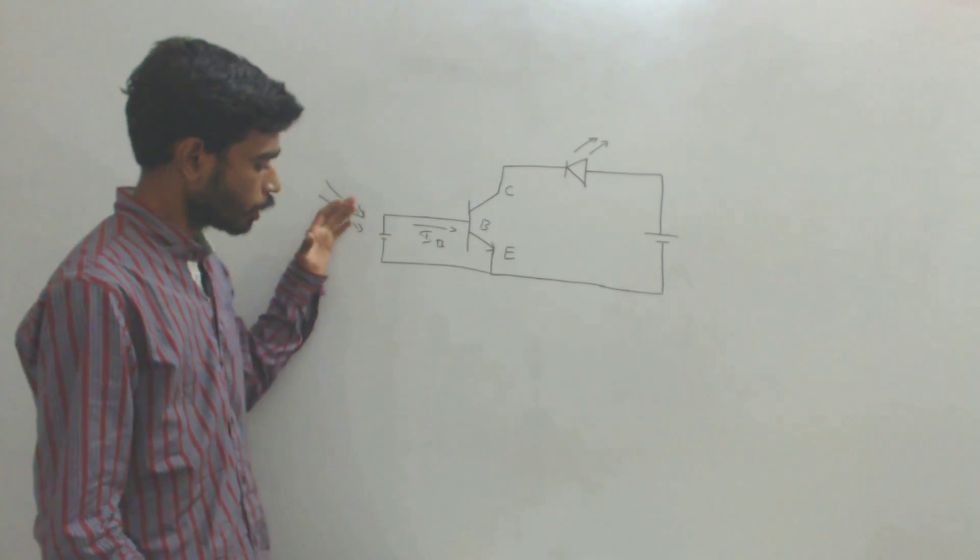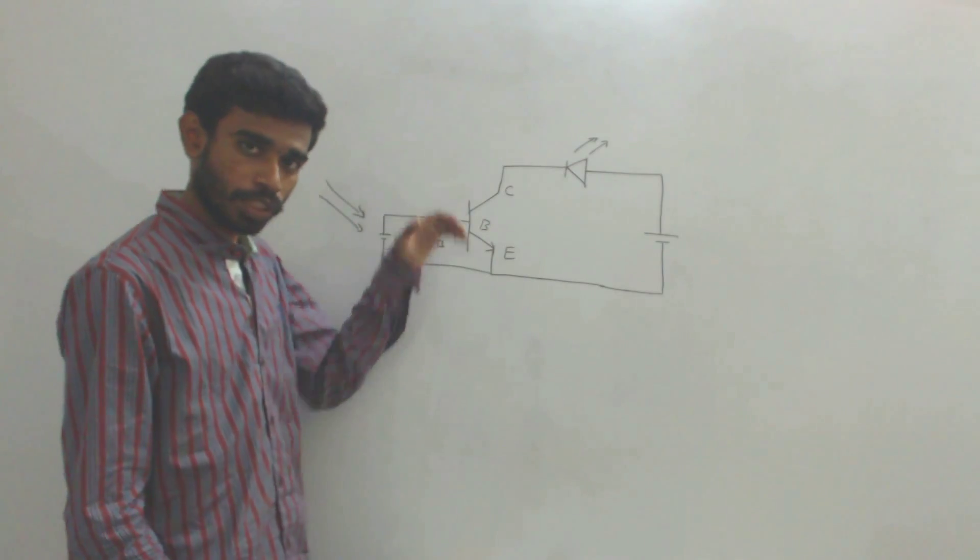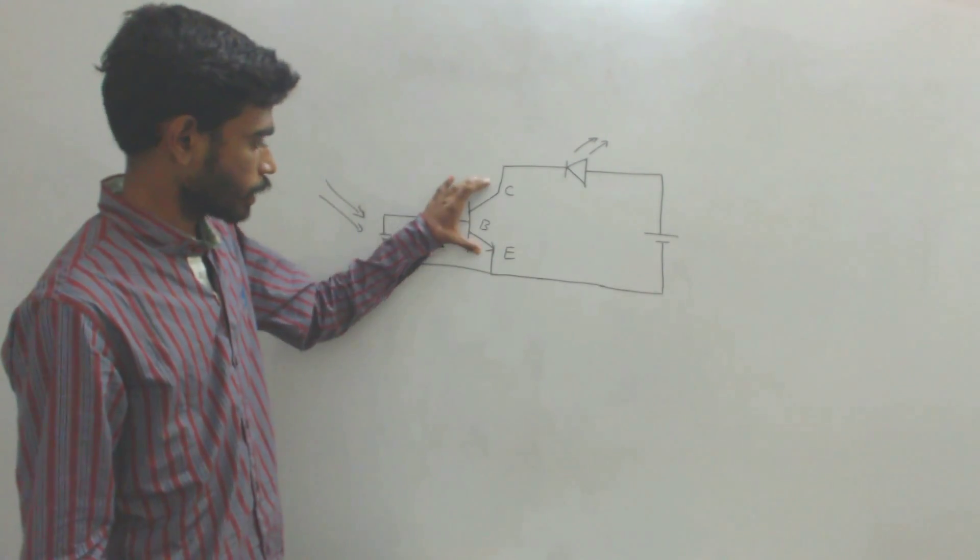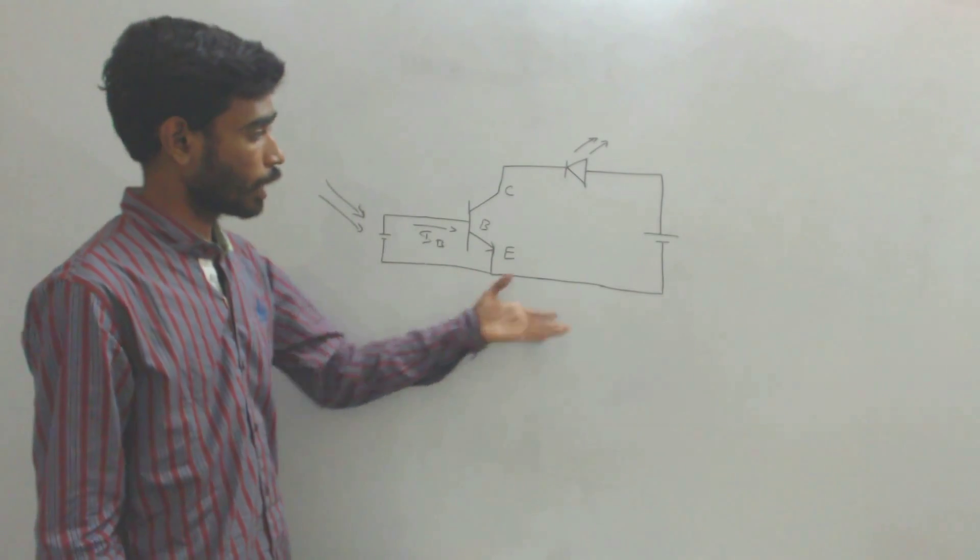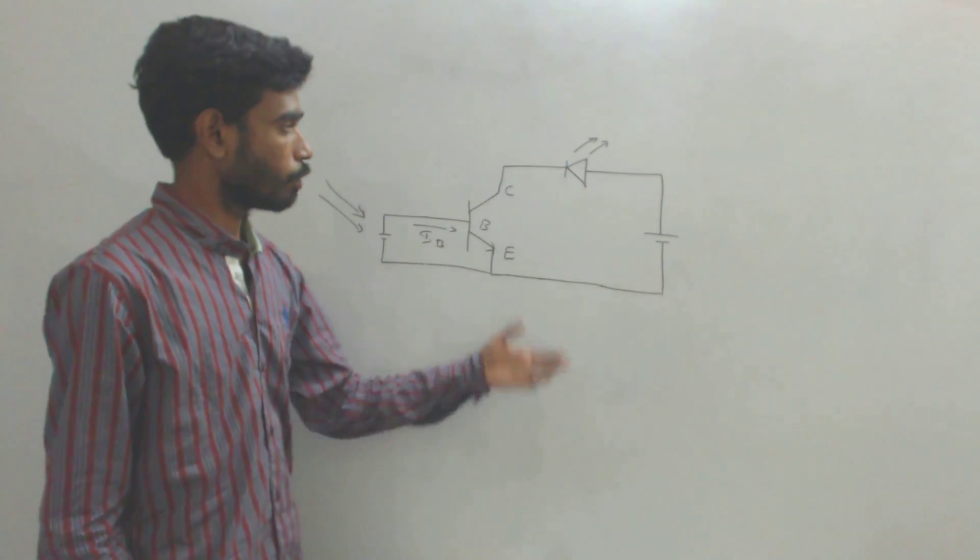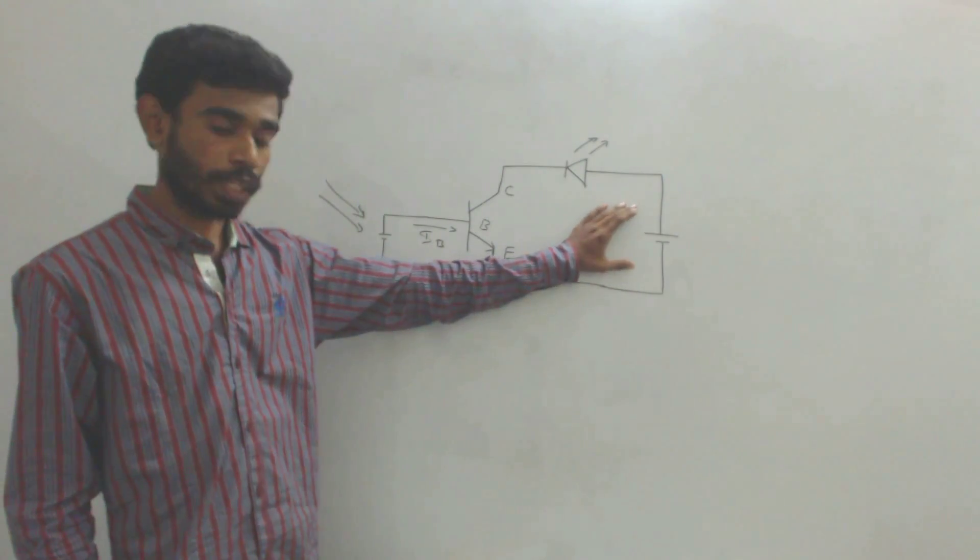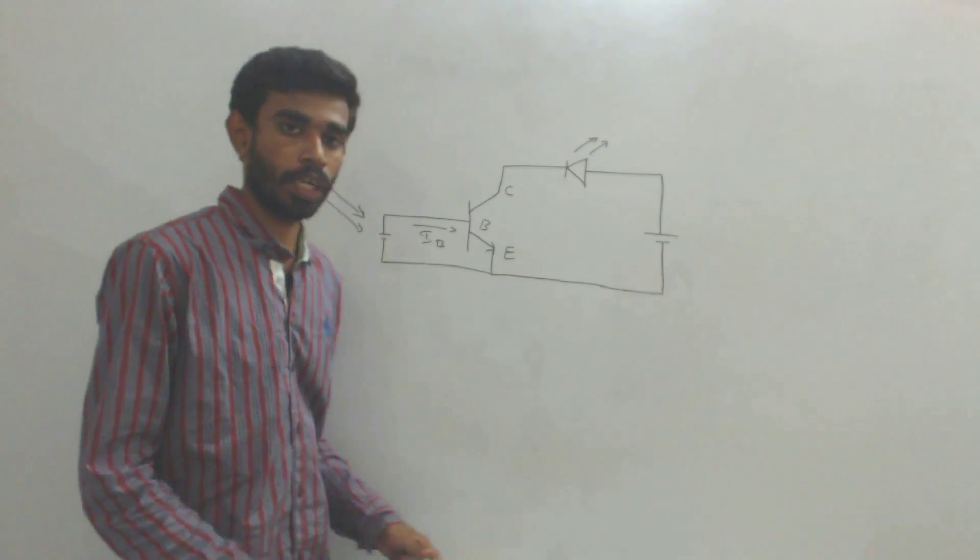This current is not large enough to drive the LED, but it is large enough to drive the transistor to saturation. So it completes the circuit and the LED glows with the power supplied by the actual voltage source that we provided earlier.